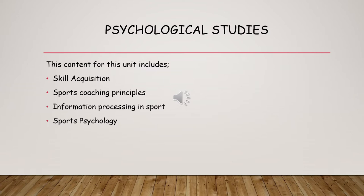As students move through Year 12 and into Year 13 we start to look at information processing in sport — the decision-making process and memory models. We look at feedback, kinaesthesis, and proprioception. Then as we move into Year 13 the sports psychology really comes in; we look at different elements such as confidence and aggression, and how confidence can be increased or aggressive acts reduced through cognitive and somatic anxiety management and control methods.